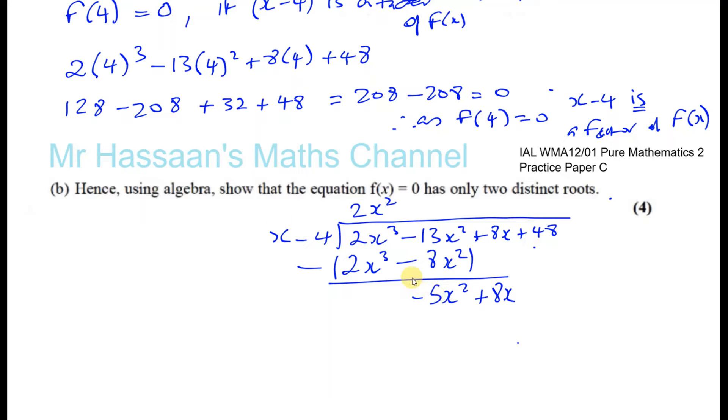So x times minus 5x gives me minus 5x². So I'll write minus 5x here. Minus 5x times x is minus 5x². And minus 5x times minus 4 is plus 20x. So when I subtract these two lines, I'm going to have a 0 here. I have 8 minus 20, which is minus 12x. Bring down the next term, which is 48.